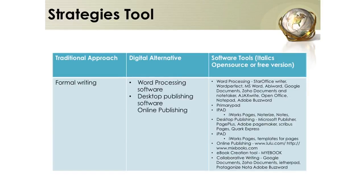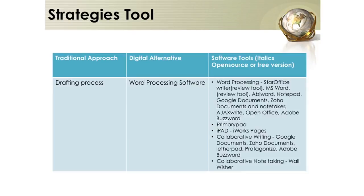If the activity is about formal writing, the tool is as simple as paper. The digital alternative is using a word processing software or desktop publishing software, or an online publishing tool such as My eBook. We also have collaborative writing tools such as Google Documents, Zoho Documents, and Wiki. For drafting processes, the traditional tool is the drafting table; the alternative is word processing software such as StarOffice, MS Word, Notepad, PrimeYard Pad, or collaborative writing via Google Documents.